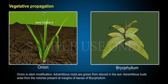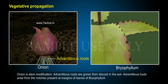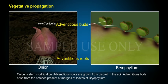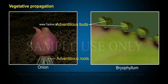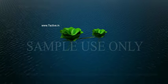Onion is a stem modification. Adventitious roots grow from the discoid stem in the soil. Adventitious buds arise from the notches present at the margins of leaves of Bryophyllum. This ability is fully exploited by gardeners and farmers for commercial propagation of such plants.